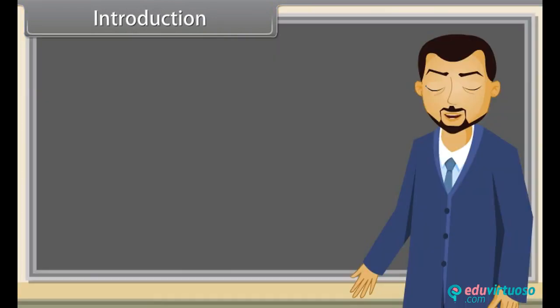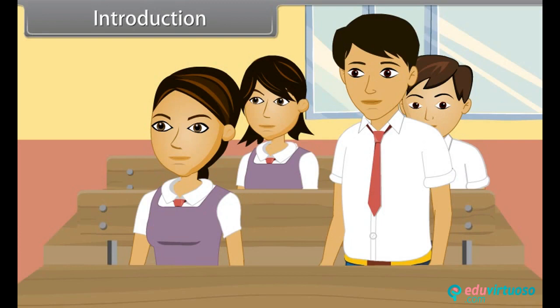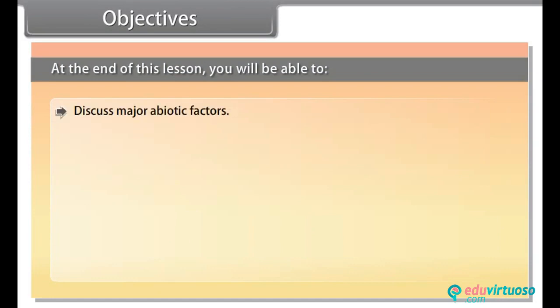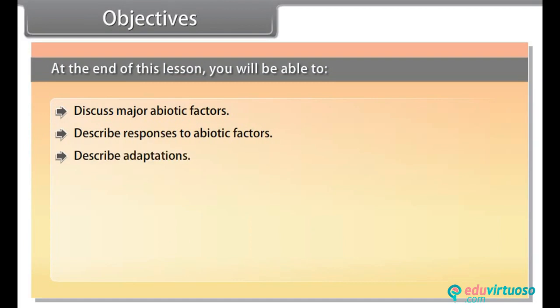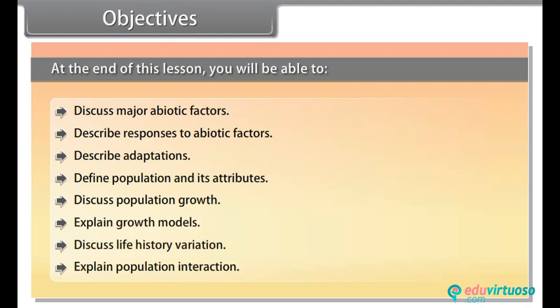Well said. Examples of organisms are mammals, birds, bacteria, fungi, etc. Good question Rajesh. We know that the population of organisms has certain characteristics. On the basis of their characteristics we define the population of organisms. In this lesson you will learn organisms and their population. Objectives: at the end of this lesson you will be able to discuss major abiotic factors, describe responses to abiotic factors, describe adaptations, define population and its attributes, discuss population growth, explain growth models, discuss life history variation, and explain population interaction.